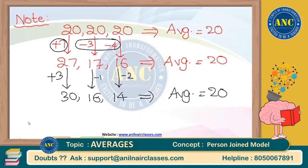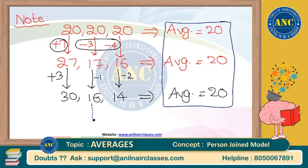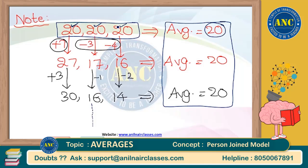If I want my average to be 20, I can generate infinite series. But the easiest series is making all numbers equal to 20. If the average is 20, make all of them 20. Vice versa: if all are 20, the average is 20. Using this concept we solved many questions in yesterday's class.